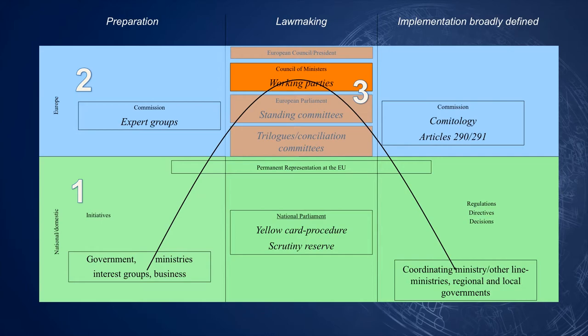As research shows, in making decisions, the Council often aims for consensus. The Council has several configurations in which line ministers come together. Furthermore, it makes use of various high-level groups and working parties in preparing its position. Parliament has directly elected members from the member states. Under the ordinary legislative procedure, it decides by majority rule.